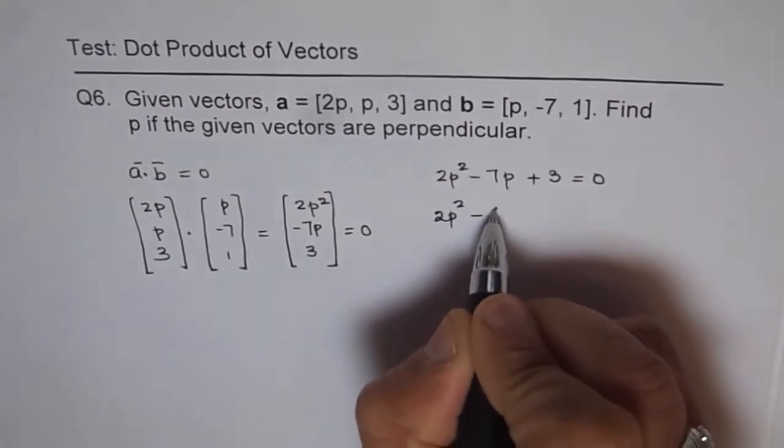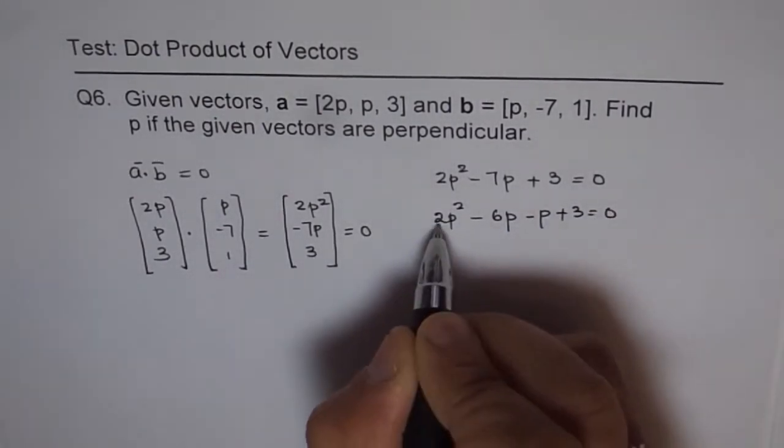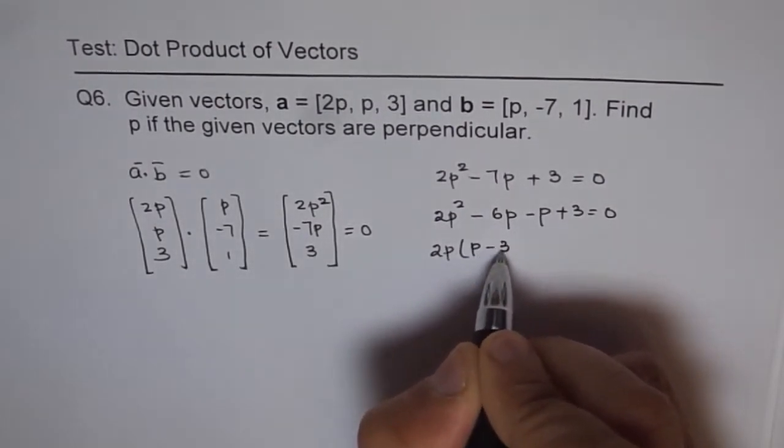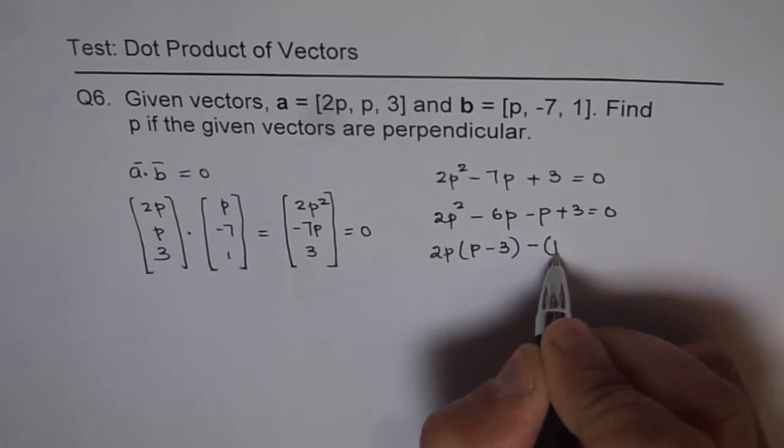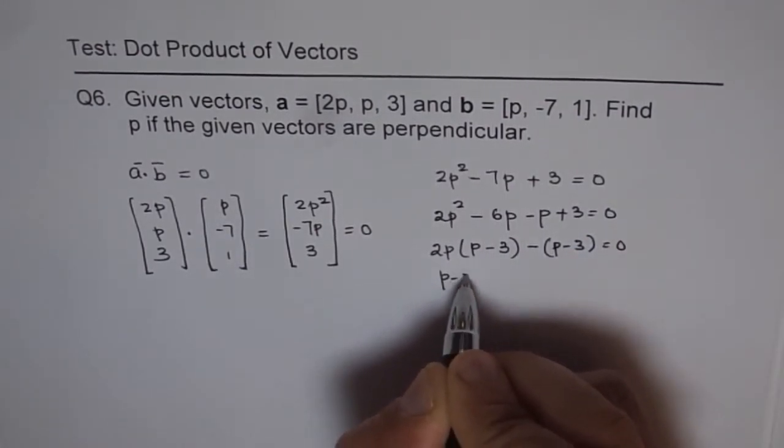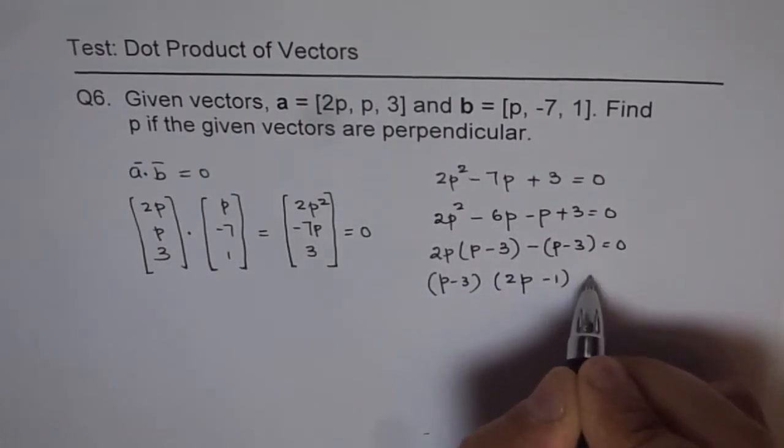So we can write this as minus 6P and minus P plus 3 equals to 0 and when we factor this we get 2P here, we get P minus 3 and here we have P minus 3. P minus 3 can be factored out and we get 2P minus 1 equals to 0.